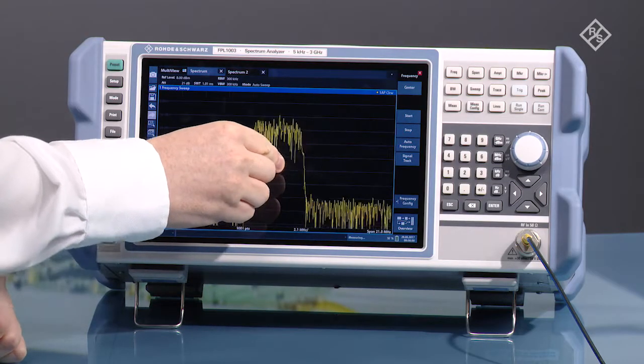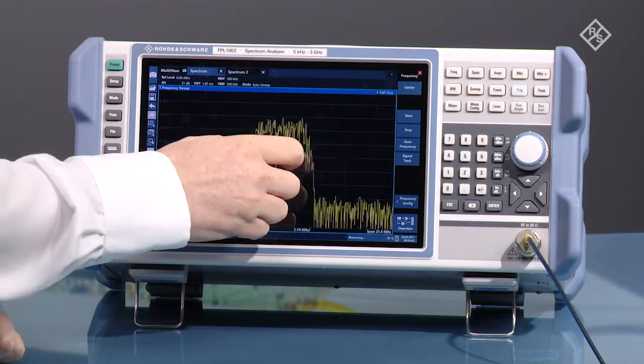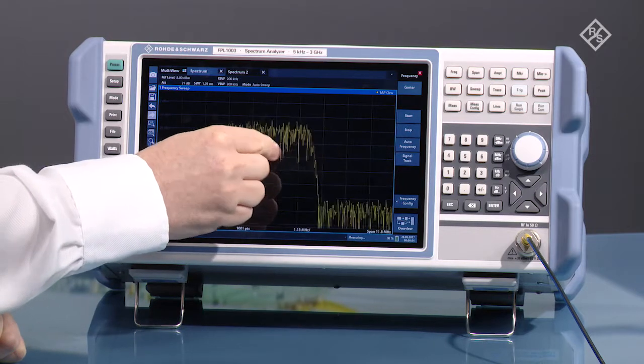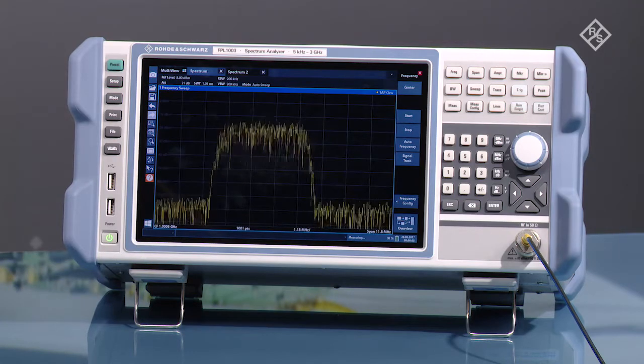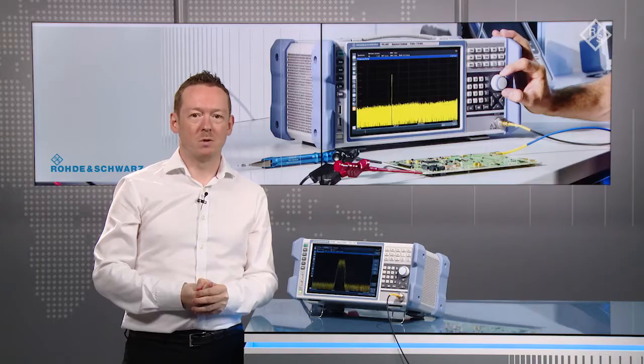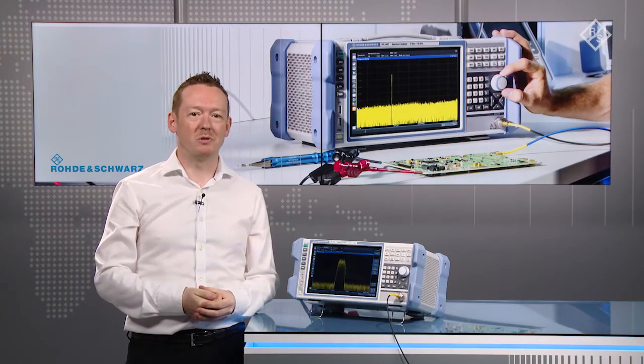Frequency, span and amplitude can be easily adjusted on the touch screen user interface and the instrument automatically selects the necessary RF parameters to optimize signal-to-noise performance. With this you can ensure you can locate problems with minimal effort.